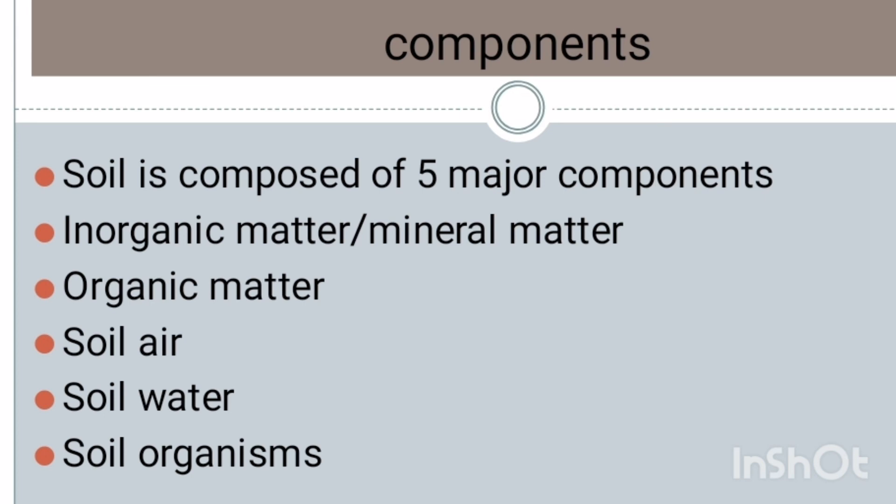Soil is composed of five major components. First, inorganic matter or mineral matter. Second, organic matter. Third, soil air. Fourth, soil water. And finally, soil organisms.